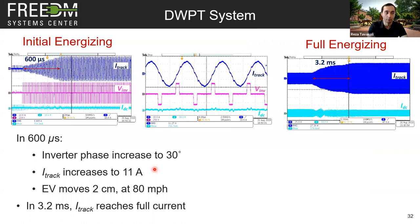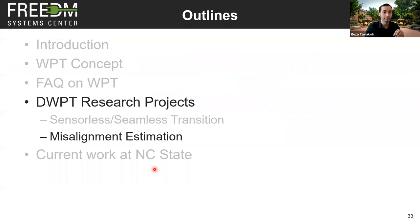Regarding energization speed: we achieve initial energization in 600 microseconds, which means that at 80 miles per hour, the vehicle only moves about two centimeters. This means that if the receiver pad is just two centimeters before the first transmitter pad, there is enough time to complete the full wireless power transfer activation.